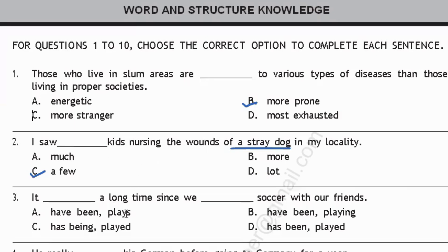Question three: 'It dash a long time since we dash soccer with our friends.' When you have the word 'since,' you should use the present perfect tense. So it's 'It has been a long time since we played soccer with our friends.' The answer is option D.